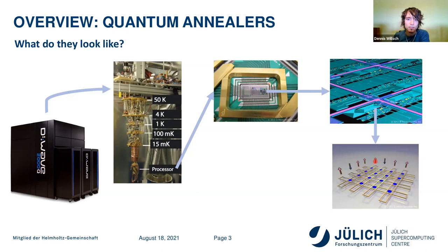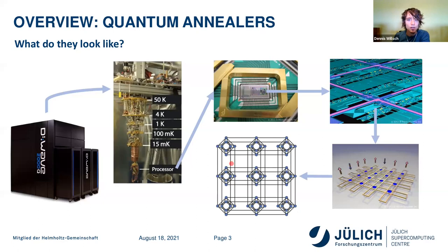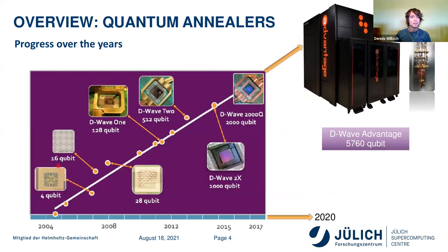Schematically, these qubits are always visualized as arrows. They are like spin systems — you can imagine small magnetic fields that evolve according to the rules of quantum mechanics. Most importantly, we have this schematic representation of which qubit is connected to which other qubit. This particular graph is the Chimera graph — that's the topology in the 2000Q quantum annealer. Here's the progress of quantum annealers over the past decades. D-Wave has roughly managed to double their processors every two years, and the most recent processor is the 5760-qubit processor called D-Wave Advantage.